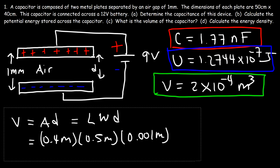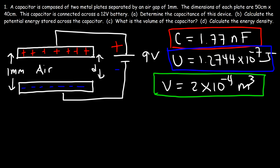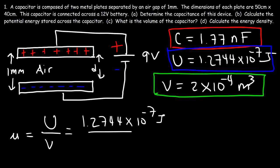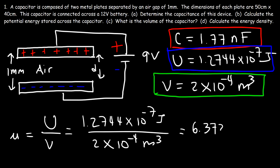Now part D: calculate the energy density of the capacitor. The energy density is equal to the potential energy stored divided by the volume — think of it like mass divided by volume for regular density. The potential energy is 1.2744 times 10 to the minus 7 joules, and the volume is 2 times 10 to the negative 4 cubic meters. This comes out to be 6.372 times 10 to the negative 4 joules per cubic meter. That's the energy density of this capacitor.